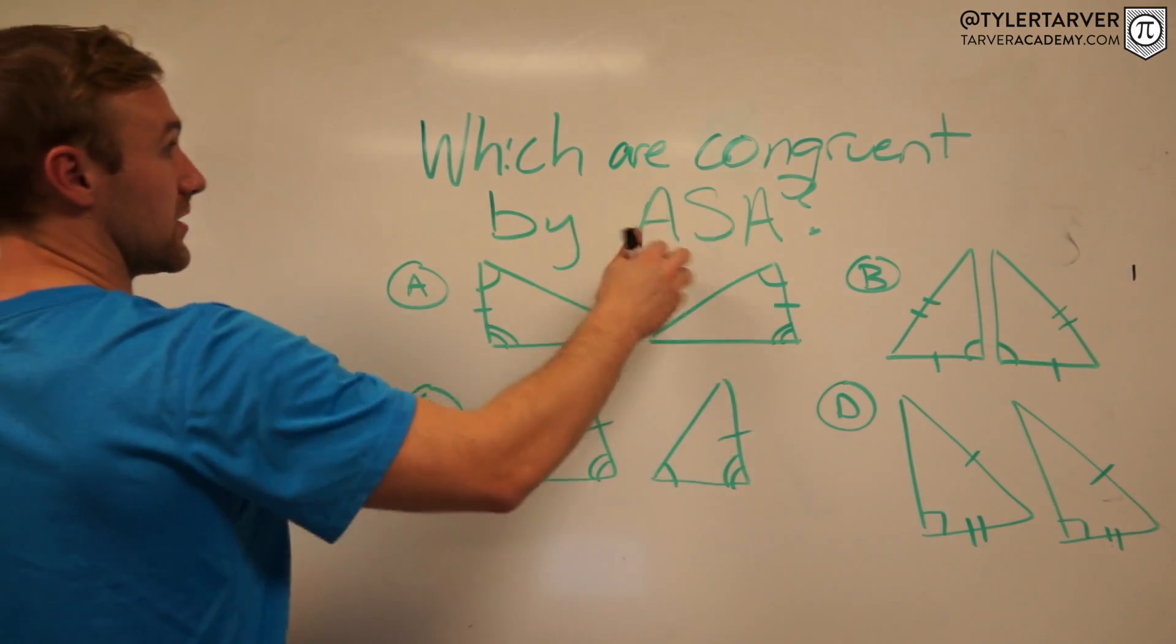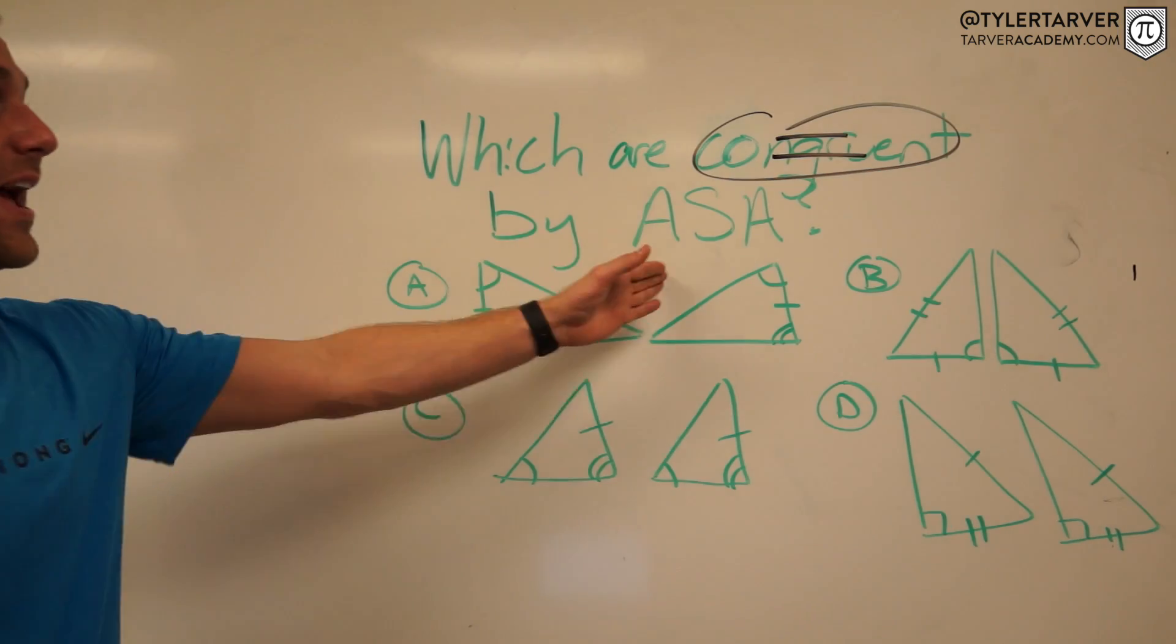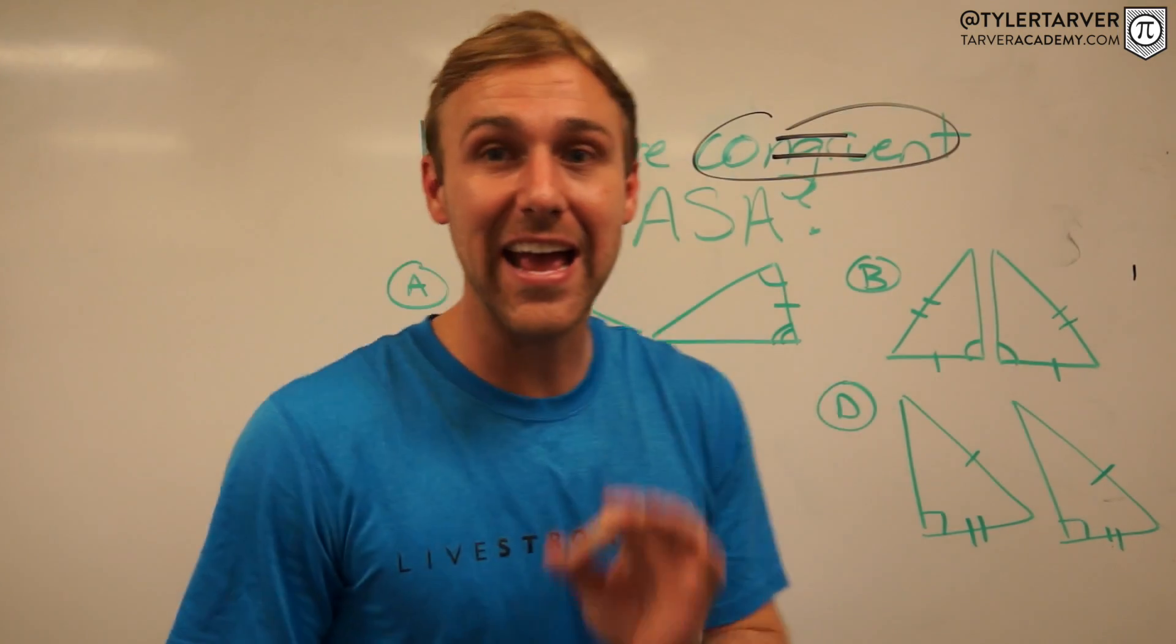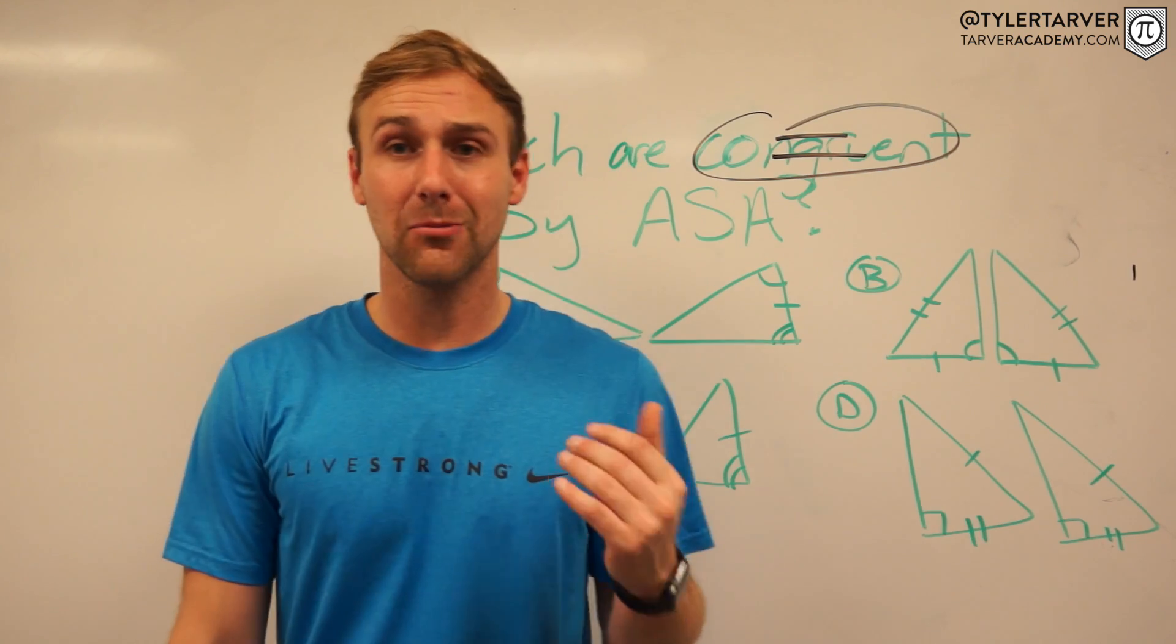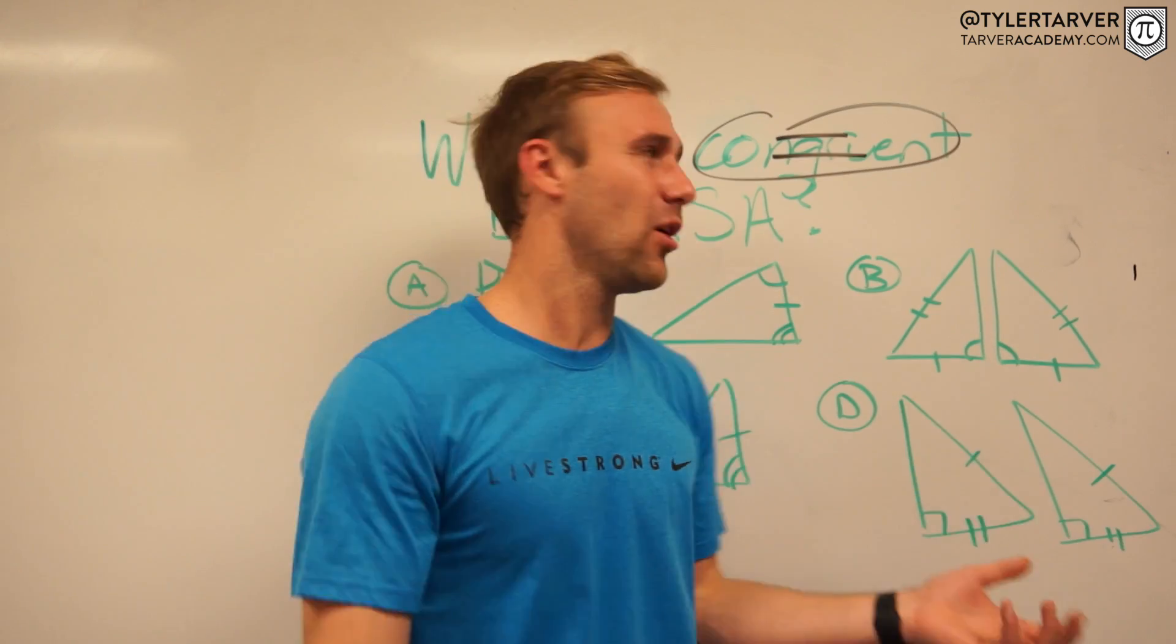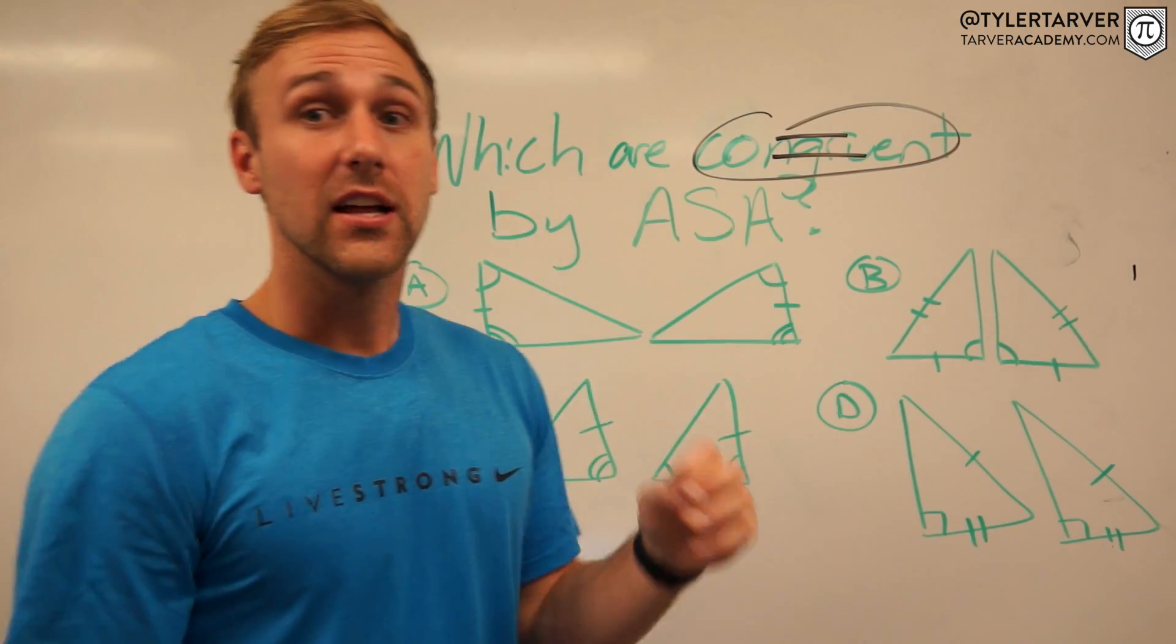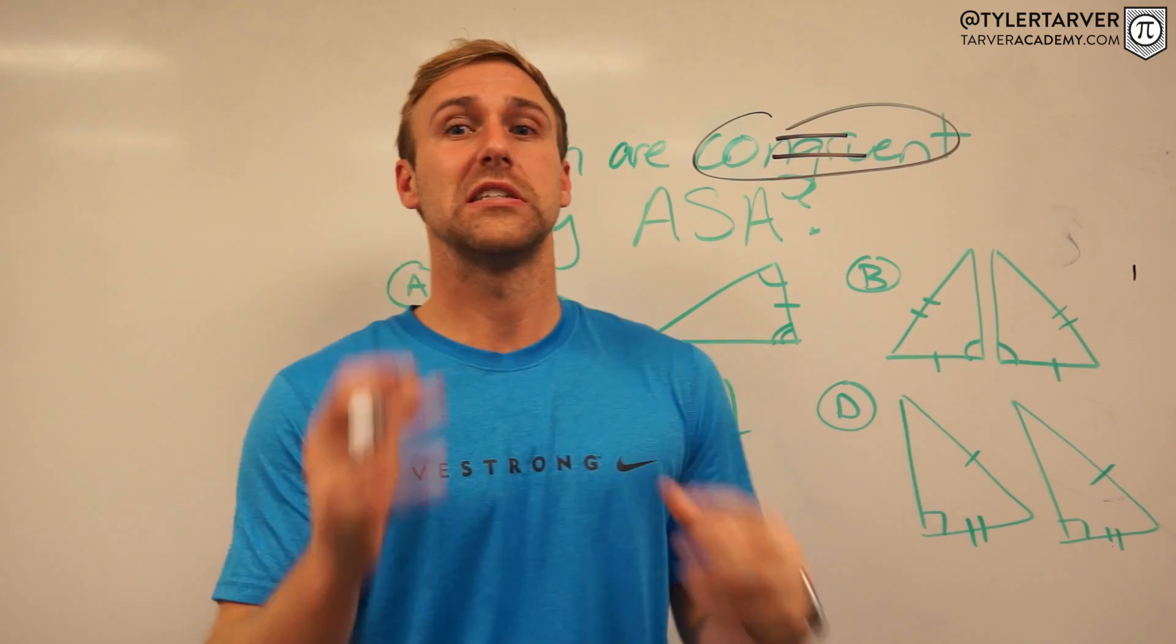So congruent means equal. Which ones are equal by ASA? Now, what does ASA mean? No, it's not some weird government organization. And no, it's not some group that your parents are in at their job. ASA, think about it. You're working with triangles here. What would make sense for those to mean?